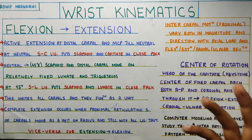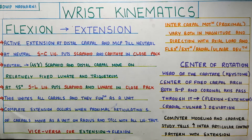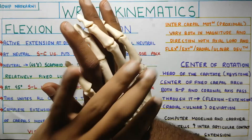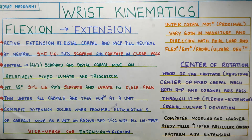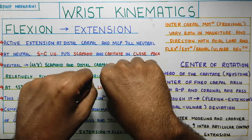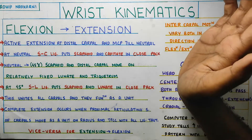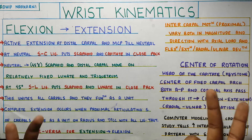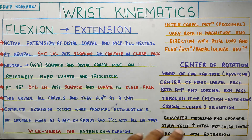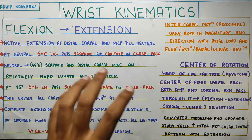Finally, computer modeling and cadaveric studies showed that there is increased intra-articular contact that happens with extension. From flexion going into extension, the intra-articular contact between the carpals increases, which somewhat counteracts the concave-convex rule - where we go for a posterior or downward glide to improve extension. This finding counteracts the concave-convex rule we commonly apply, which is why a lot more research is needed to understand exactly how wrist movement occurs, given how complex it is.